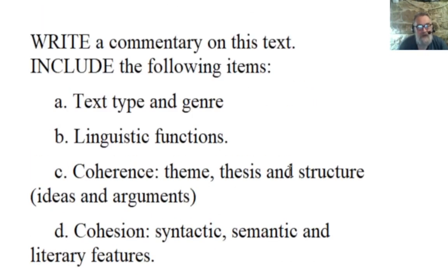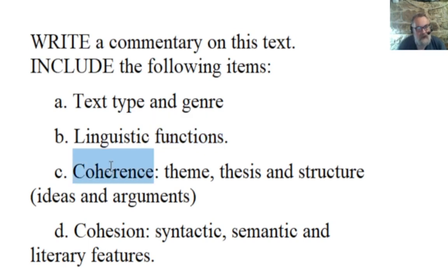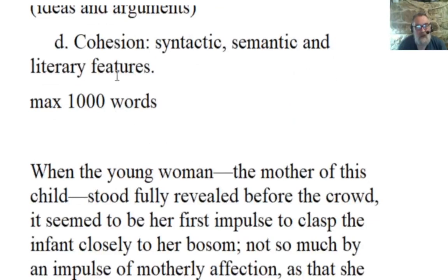Now I'm going to read the original text. The question was: write a commentary on this text. Include text type and genre — very clearly answered. Linguistic functions — very good. There are different things you've mentioned. The coherence, the way it's joined together. The theme, thesis and structure, ideas and arguments behind it. And then the cohesion, syntactic, semantic and literary features. That's really good.